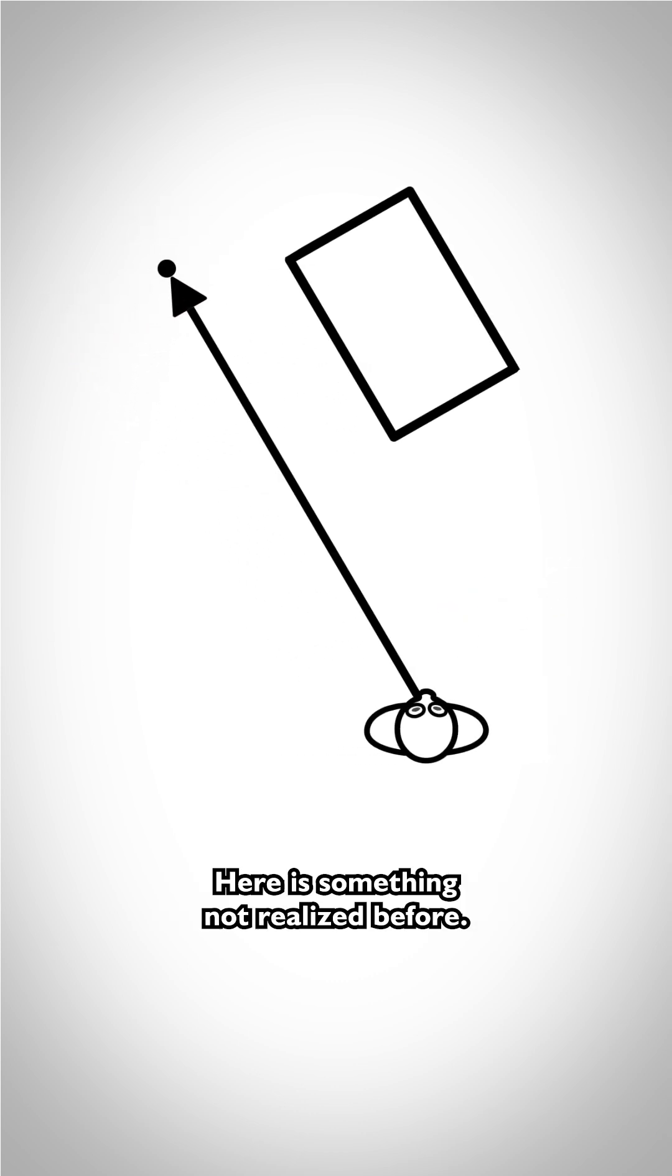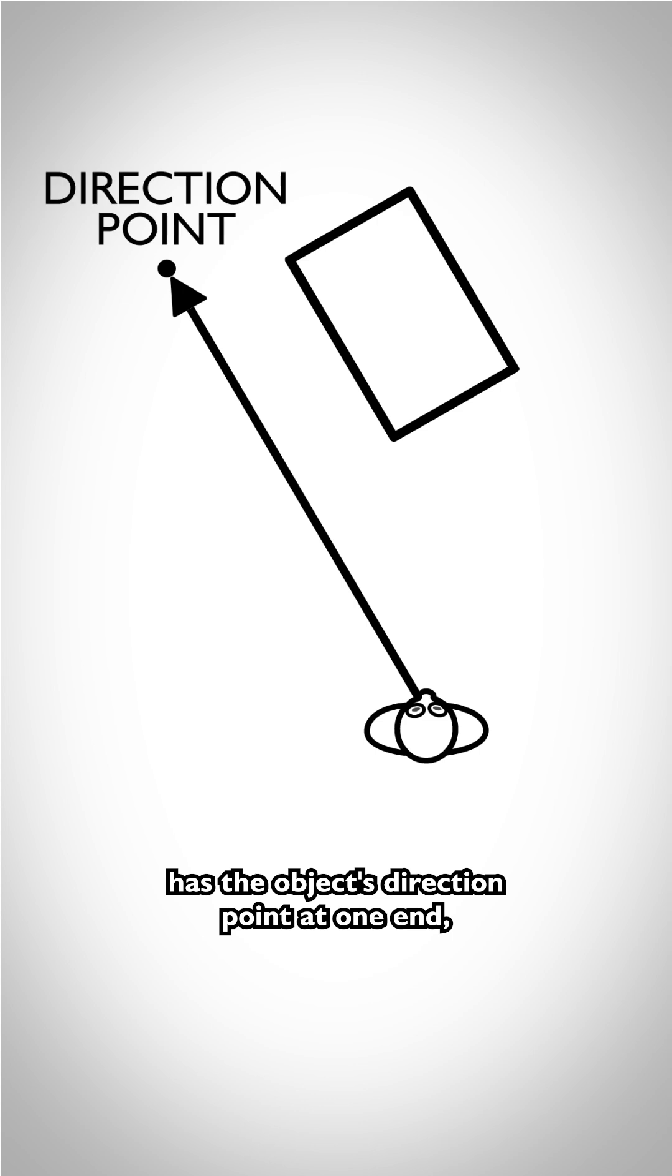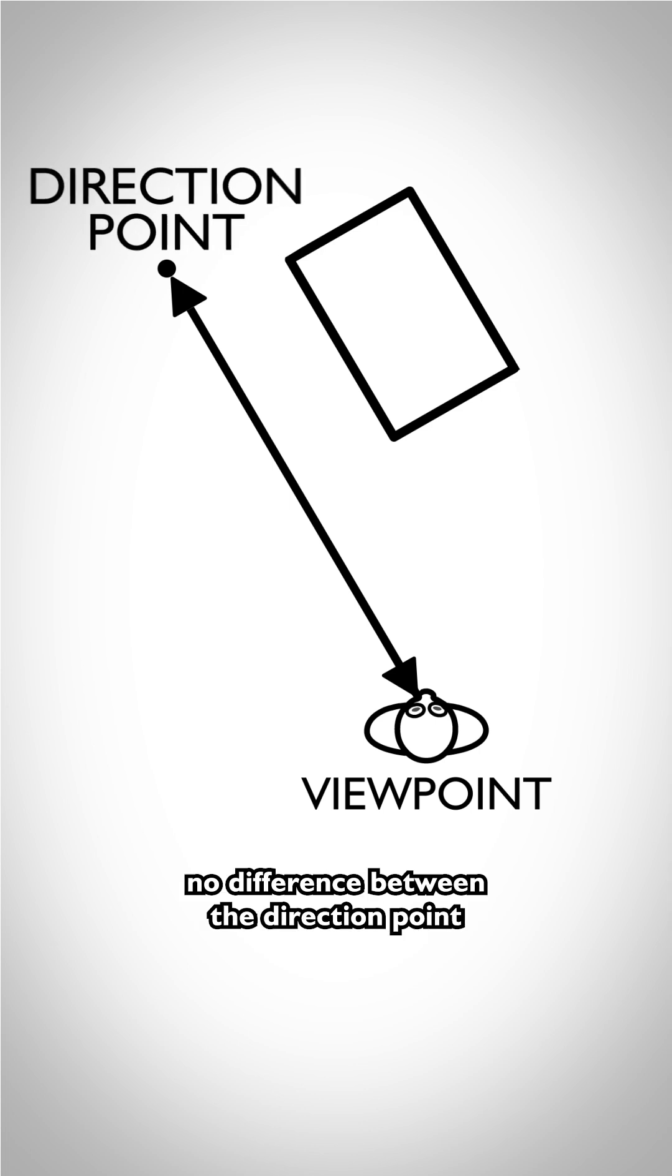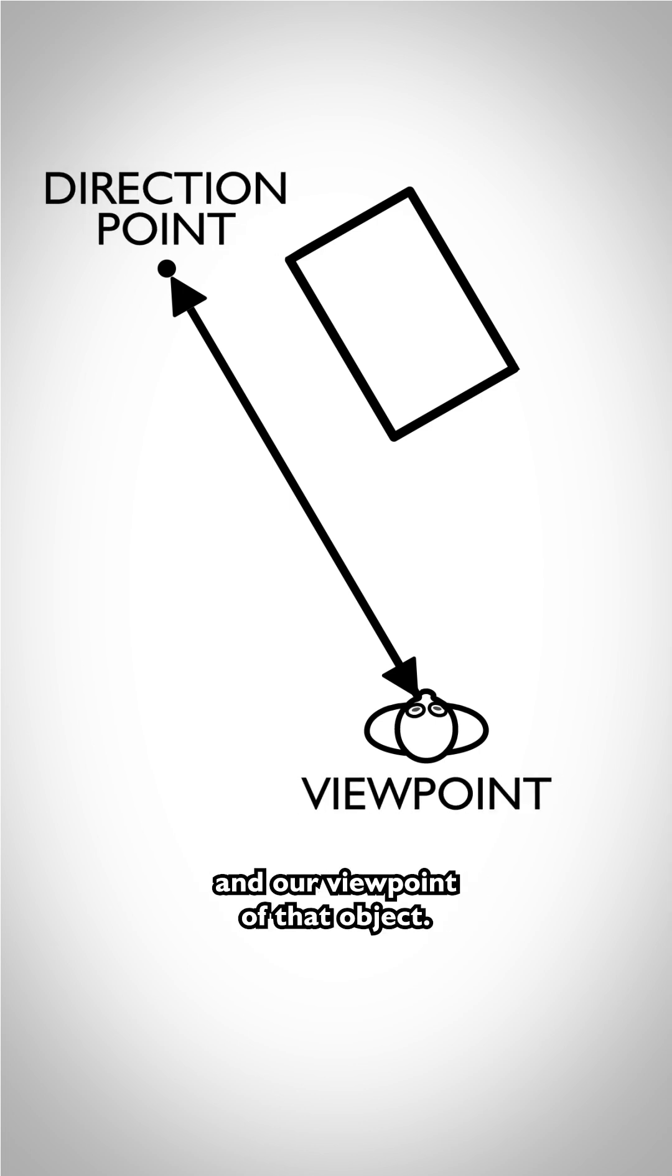Here is something not realized before. Notice that this line of direction has the object's direction point at one end, and our viewpoint at the other. This makes our viewpoint and the direction point equal but opposite. In this way, the direction point acts like a mirror reflection of our viewpoint. For that reason, there will literally be no difference between the direction point and our viewpoint of that object.